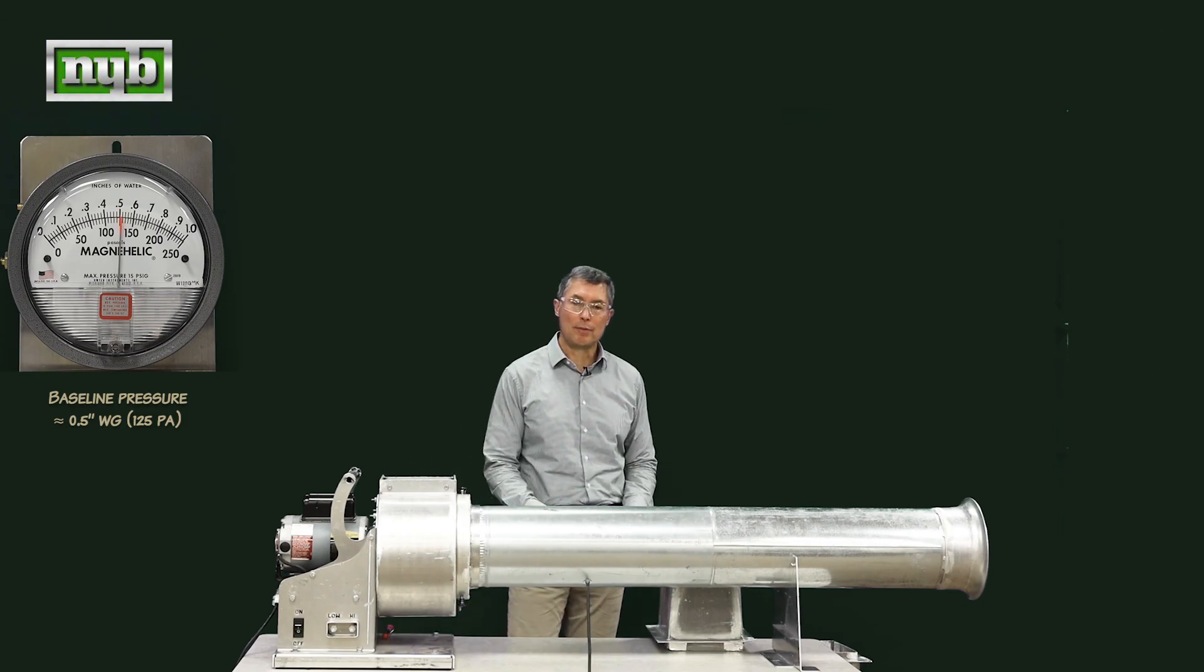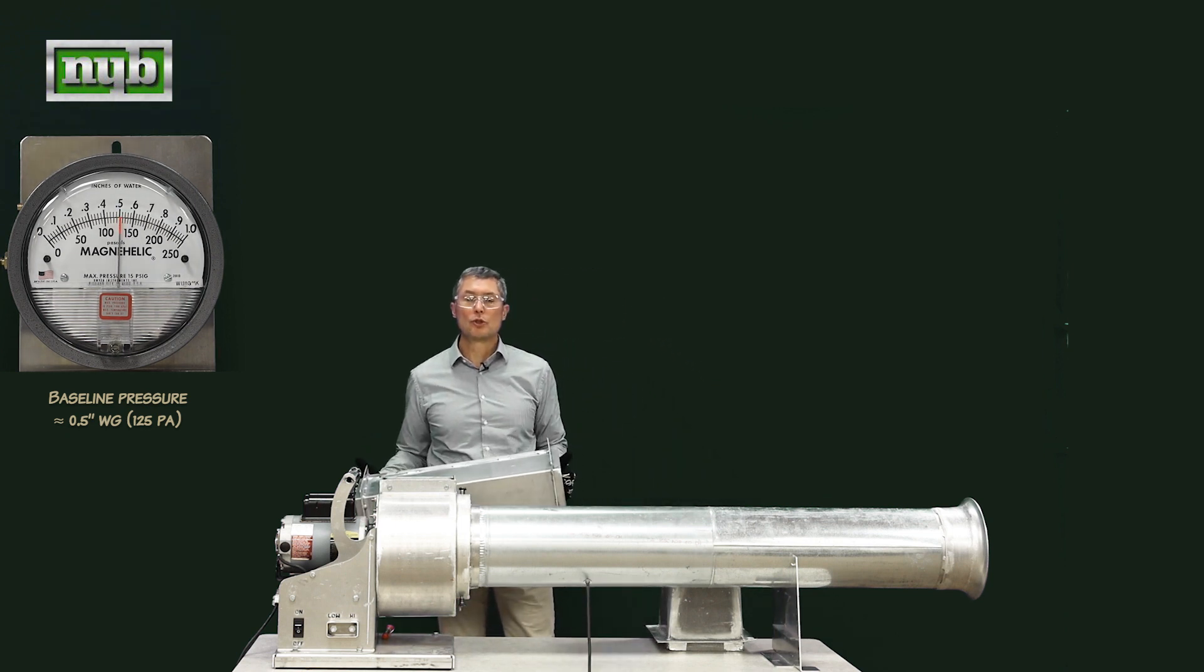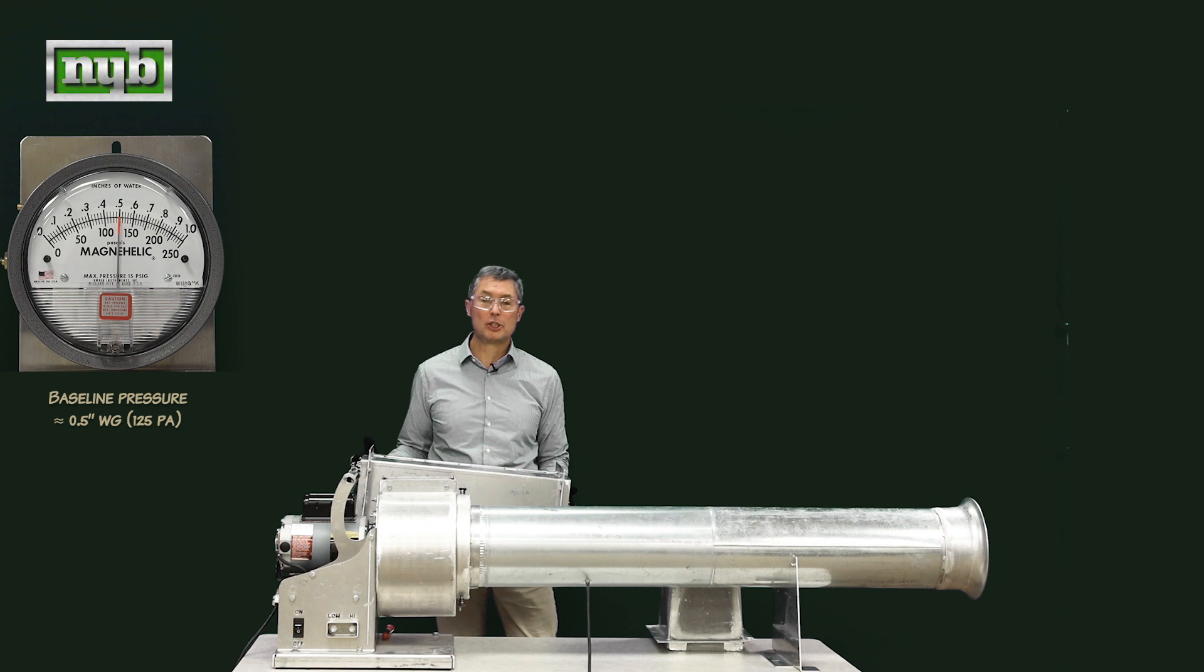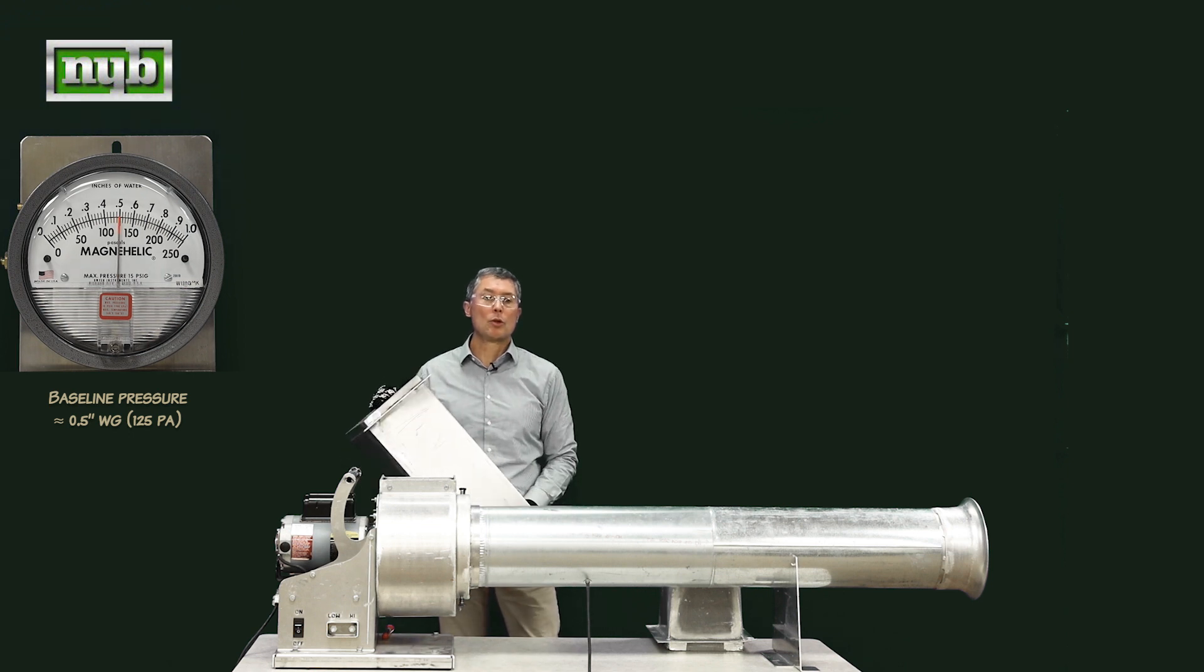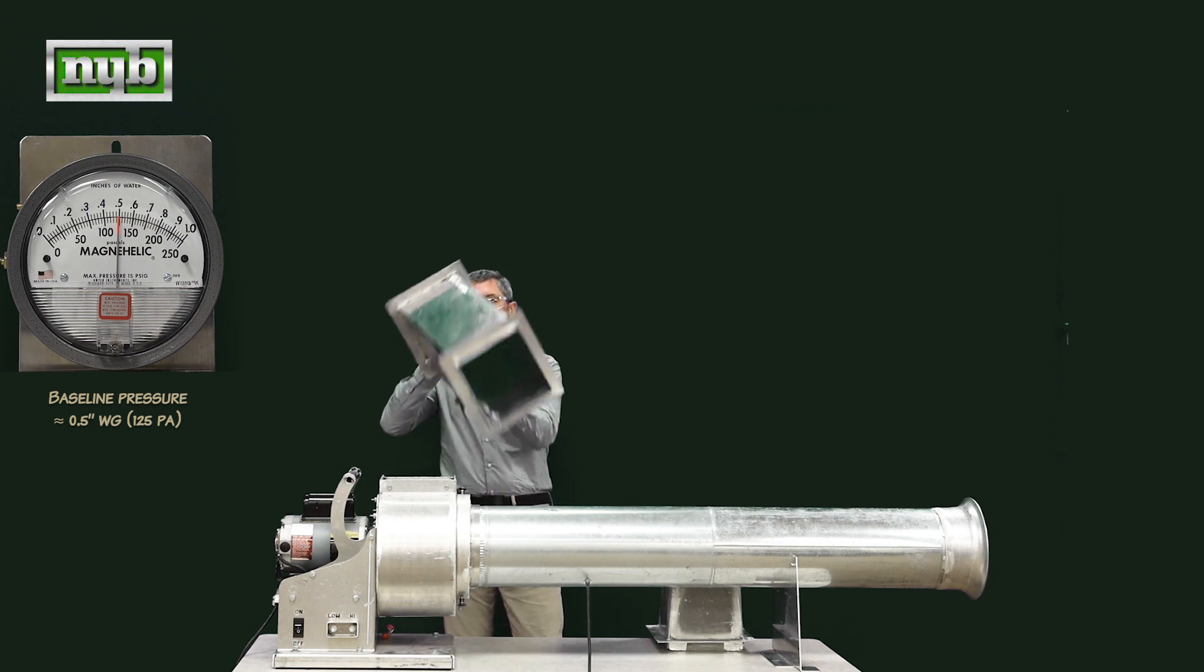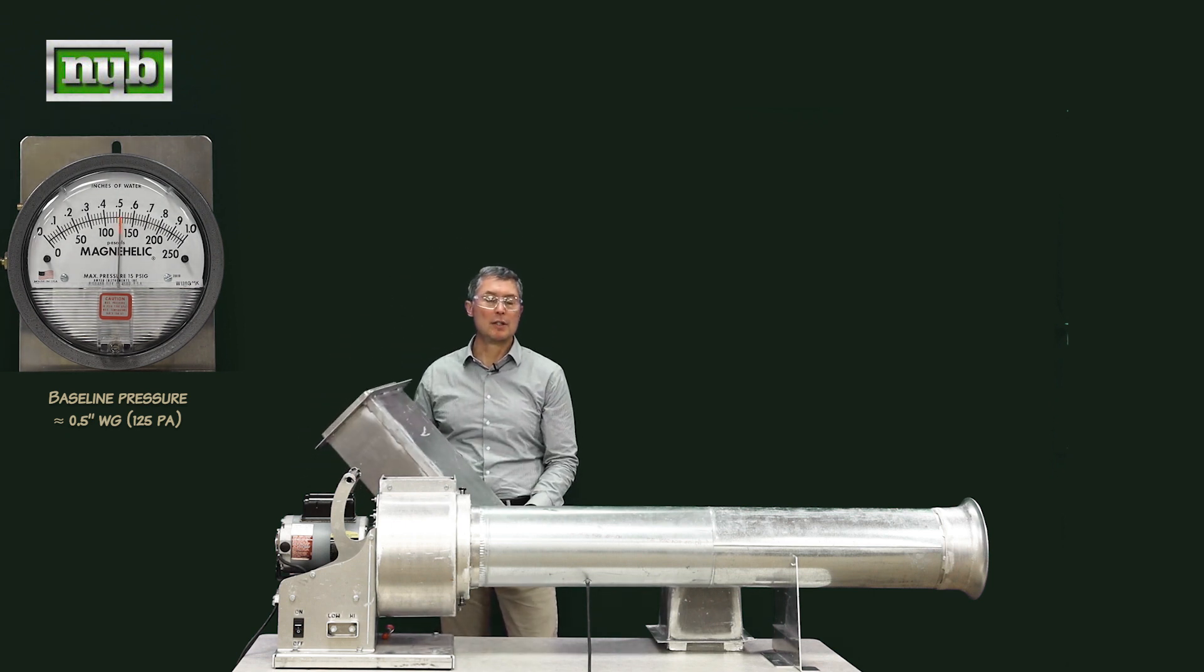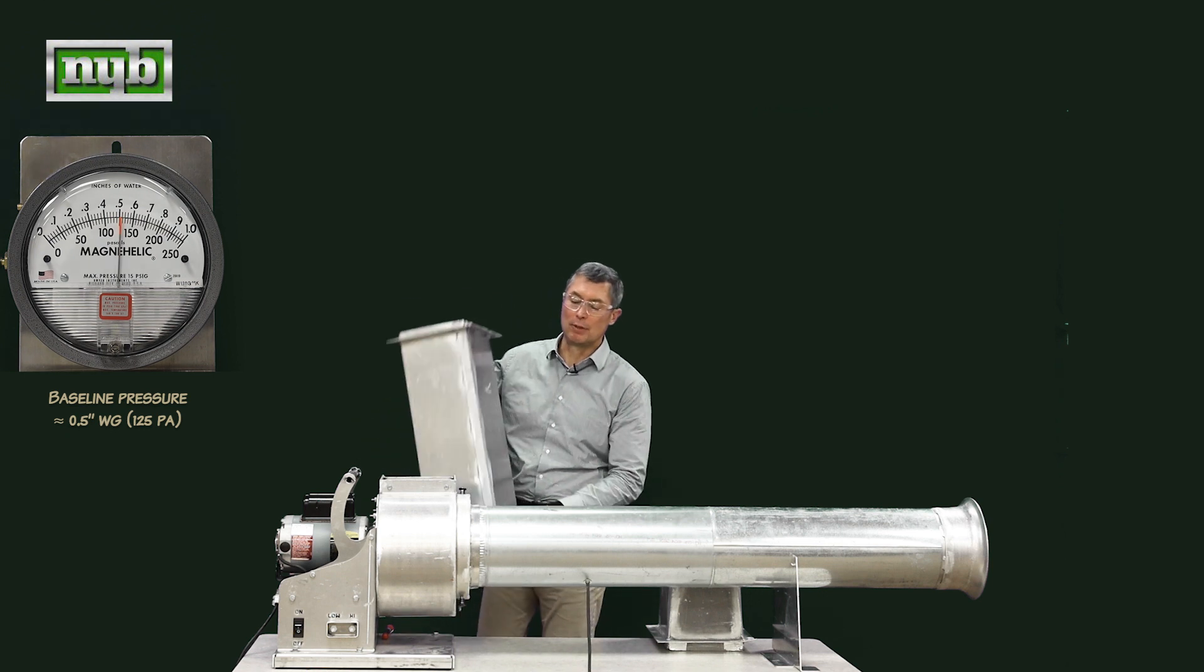To straighten out that velocity profile or get some static pressure regain, SMACNA, AMCA, most industry standards require or request a straight run of ductwork. And looking at the straight run of ductwork there's nothing inside of it. Just clean open duct. Nothing there to forcibly change the velocity profile.